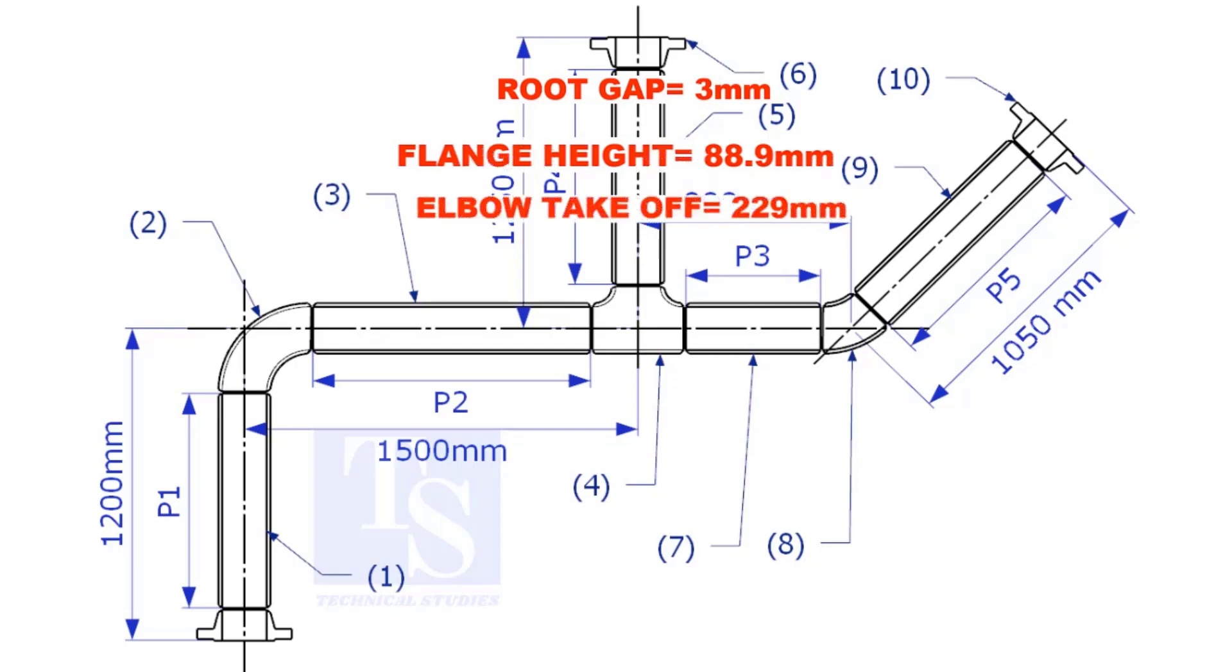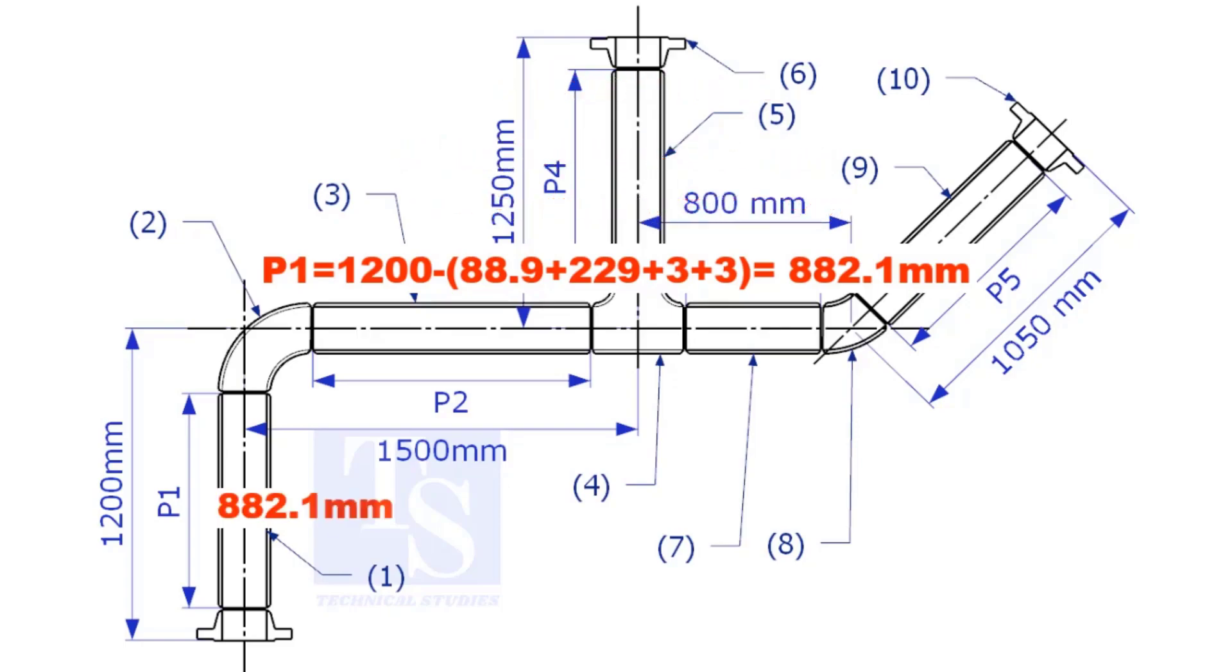Substitute the sum of the height of the flange, elbow takeoff, and 2 root gaps from the total length of 1500. Length of pipe P1 is 882.1mm.